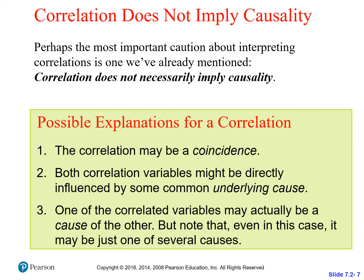One of the correlated variables may actually be the cause of the other, so there might actually be a causal relationship. But remember that things are complex — there may be several causes. Of course, it could be that all of these things are factors. There are sometimes many causes to a single event that you witness.